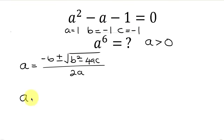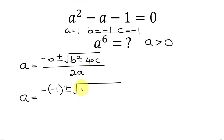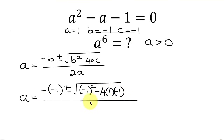Now let's substitute into our quadratic formula. We have A equal to negative B — and B is negative 1, so that gives positive 1 — plus or minus the square root of B squared, which is negative 1 squared, minus 4 times A times C, where A is 1 and C is negative 1. All over 2 times A, which is 2 times 1.